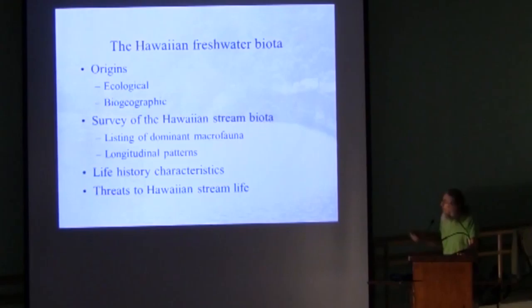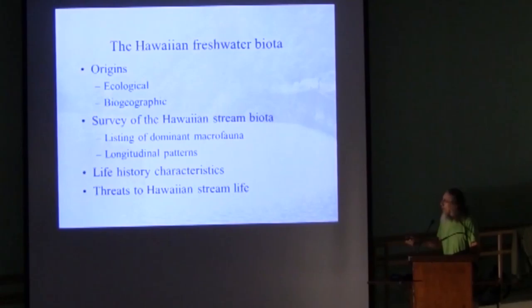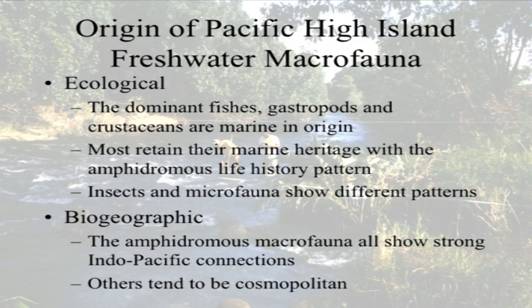The outline of the rest of the talk: I'm going to talk a little bit about ecological and biogeographic origins, then survey what we see, and then talk about life history characteristics — probably the key point — and then a little bit about threats if there's time. The dominant fishes, gastropods, and crustaceans — insects are not there, and there's a reason for it — are marine in origin.